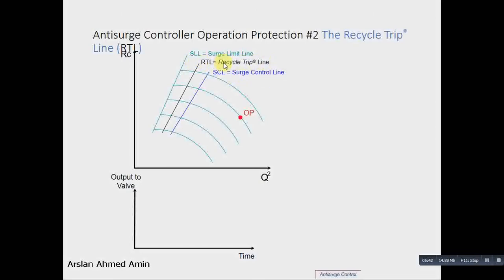This operating point, when it touches the RTL, there is a quick response. When it touches the surge control line, the response is PI response. But since the operating point is coming very fast towards the surge limit line, we need to open the recycle very quickly. Because if we do not do this, the point may cross the surge limit line. In order to protect it, we have defined another line, which is the recycle trip line.